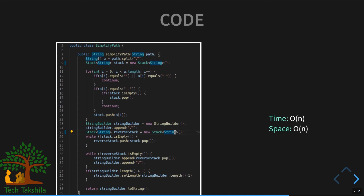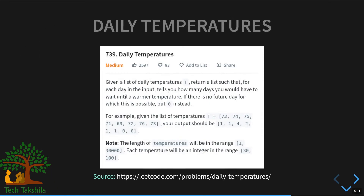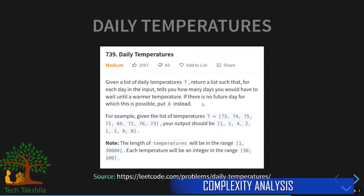The next question is Daily Temperatures. Given a list of daily temperatures, we need to find how many days it takes from each day to reach a warmer temperature. If there is no warmer temperature in future days, we output zero for that position.